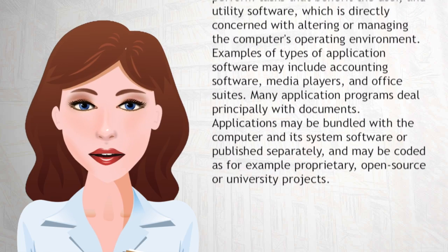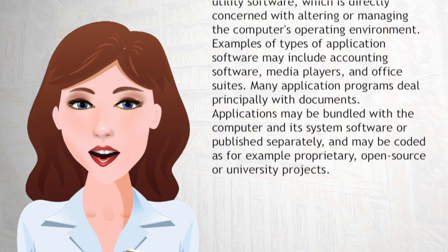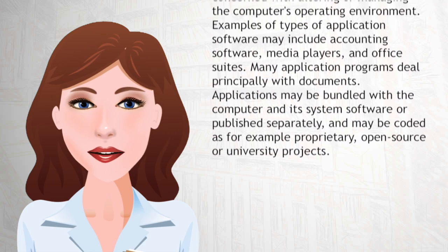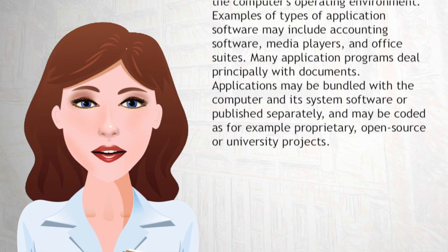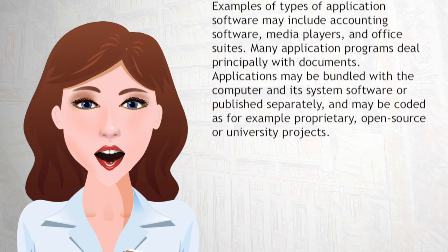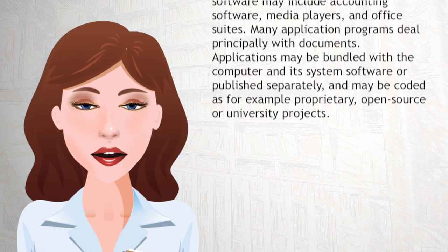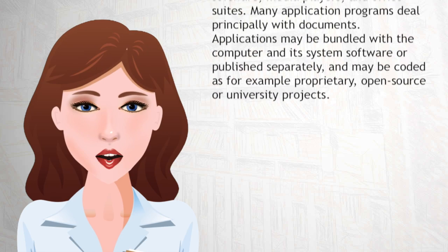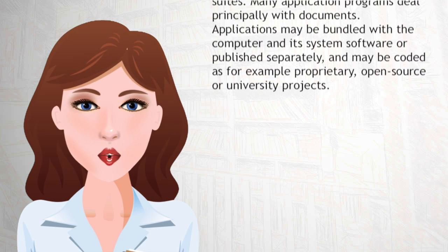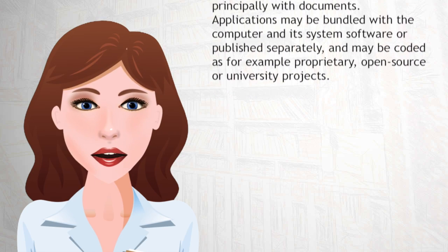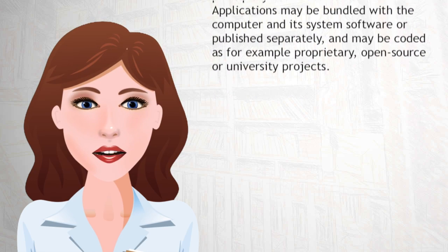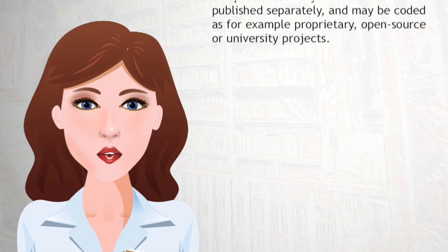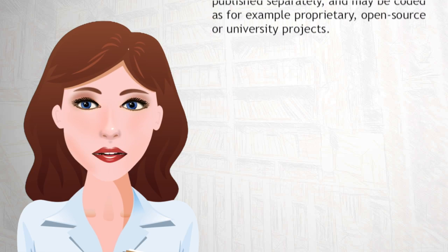Examples of types of application software may include accounting software, media players, and office suites. Many application programs deal principally with documents. Applications may be bundled with a computer and its system software or published separately, and may be coded as proprietary, open source, or university projects.